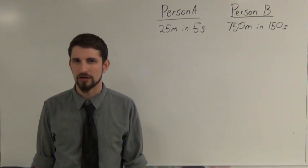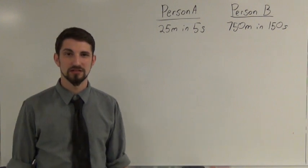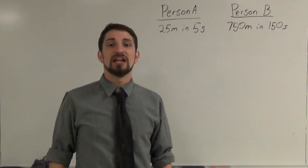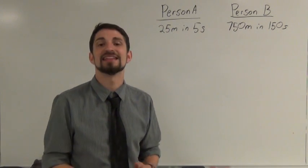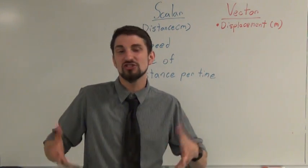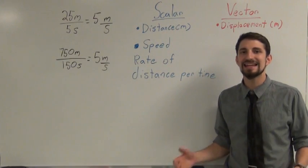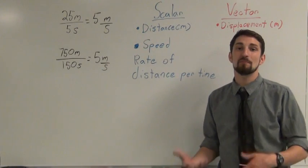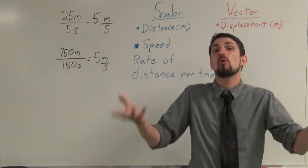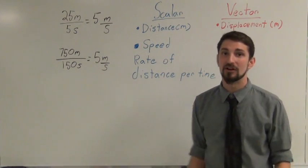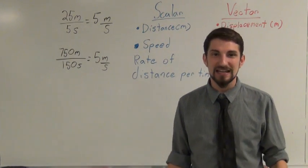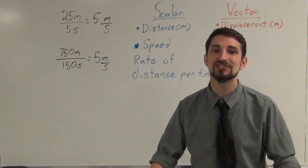Who moves quicker — person A, moving 25 meters in 5 seconds, or person B, moving 750 meters in 150 seconds? It turns out both people are traveling the same amount of distance in the same amount of time. This rate of distance per time is known as speed. Speed is the rate of how much distance you cover in a certain amount of time. If we take each person's distance and divide by their travel time, both were traveling at 5 meters per second.